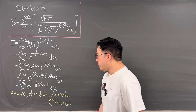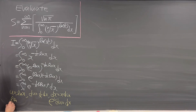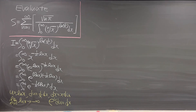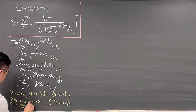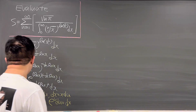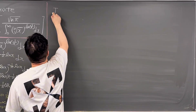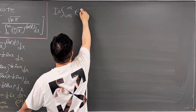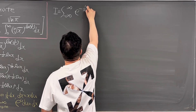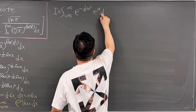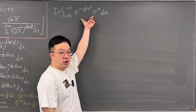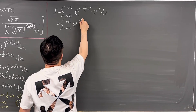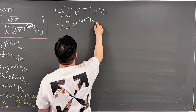For the bounds: as x approaches 0, ln(x) approaches negative infinity; and as x approaches infinity, ln(x) approaches infinity. So using this substitution, we can rewrite the integral from negative infinity to infinity of e to the power of negative (1/n) times u squared, times e to the power of u, du. Combining the two exponential terms, this is the integral from negative infinity to infinity of e to the power of negative (1/n) times u squared plus u, du.